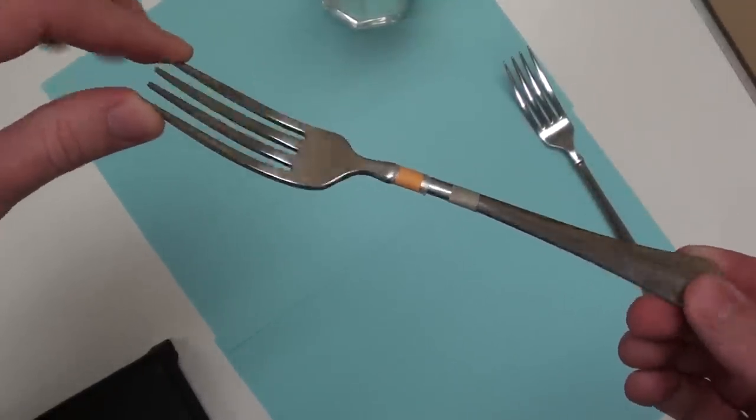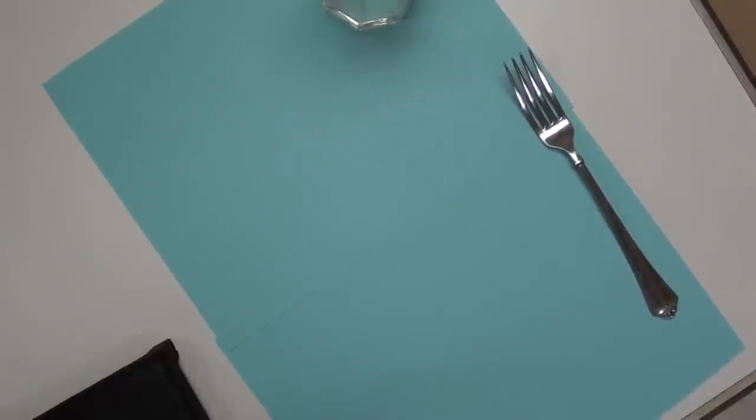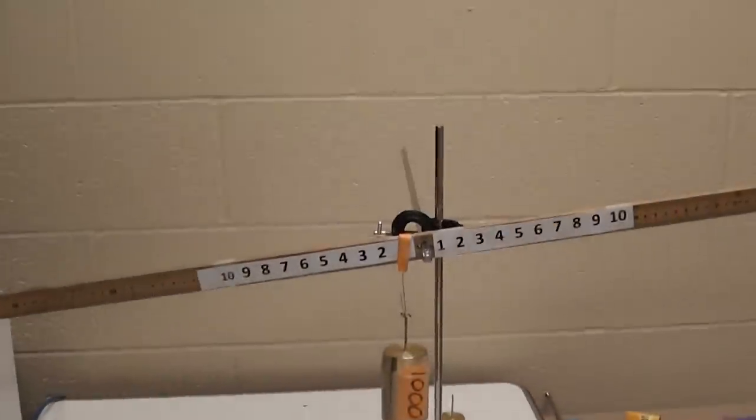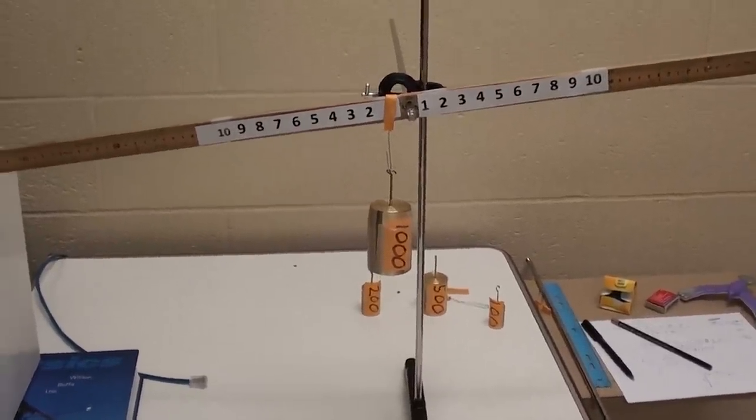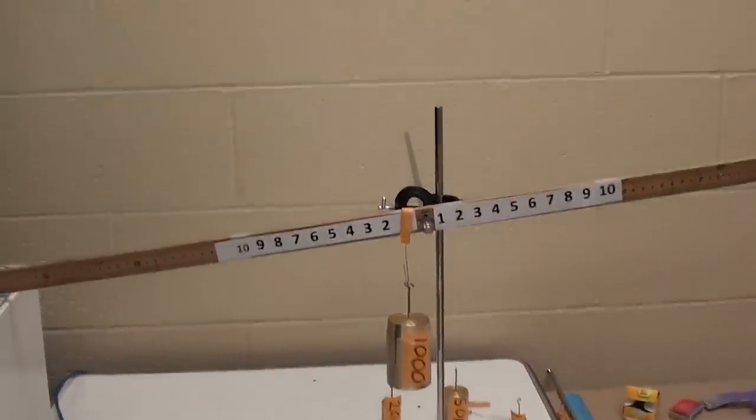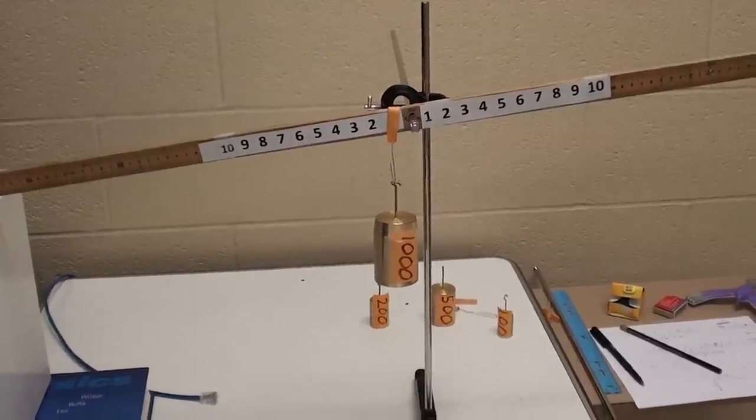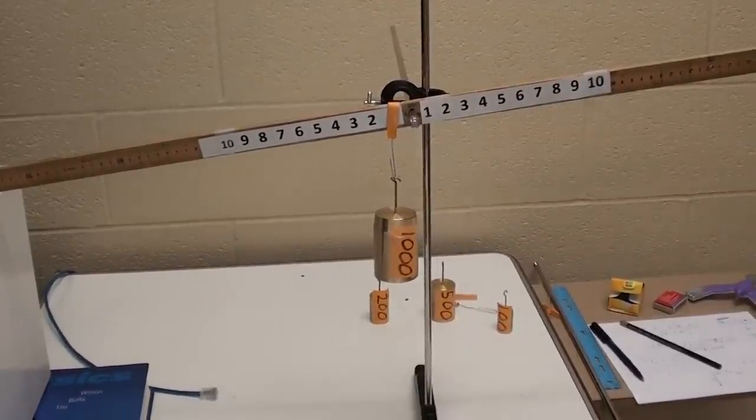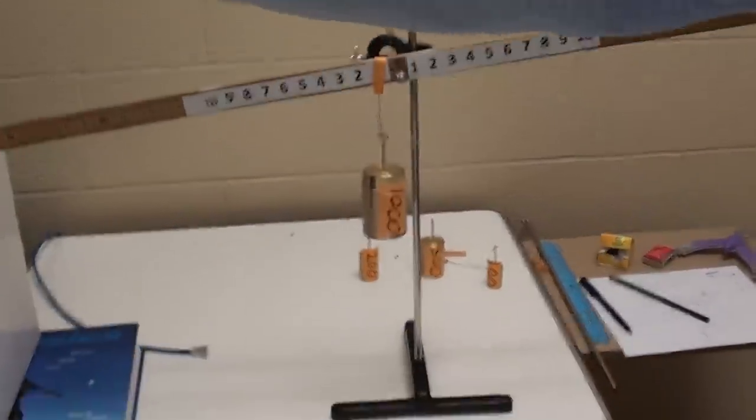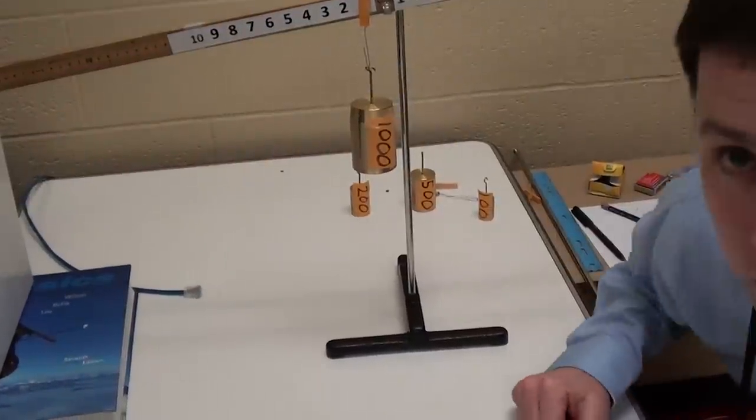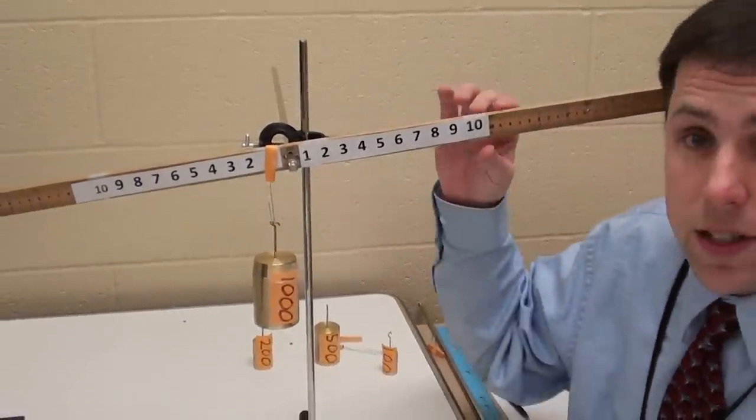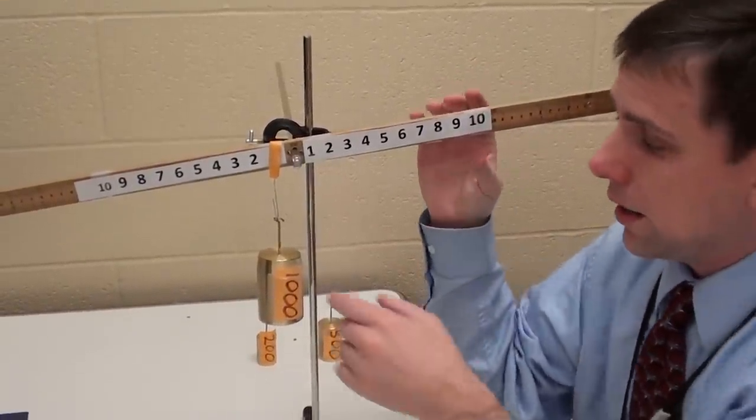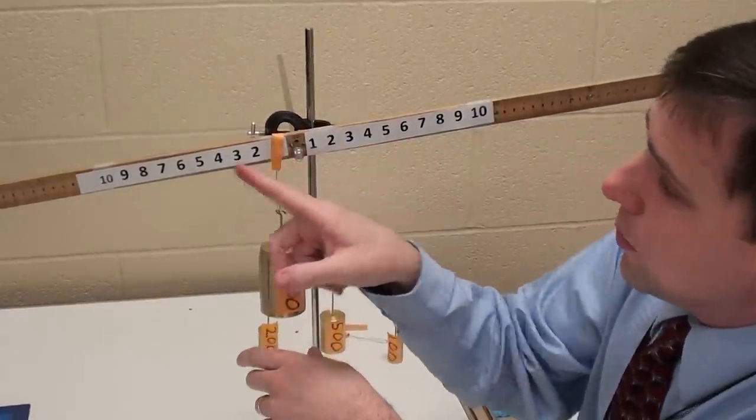What I'd like to do now is show you another demonstration related to center of mass and torque here. What I've done is I've labeled some masses from a hundred grams all the way up to a thousand grams. I have these positions marked. I have a thousand gram mass here and I can control the position at which I hang the mass and obviously which mass I hang from here.